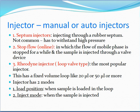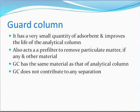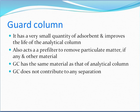The valve loop injector is the most popular type. It has a fixed volume loop, such as 20 or 50 microliters, and operates in two modes: load position, where sample is loaded into the loop, and inject mode, where the sample is injected onto the column. The guard column contains a small quantity of absorbent, improves the life of the analytical column, and acts as a pre-filter to remove particulate matter and other interfering materials.